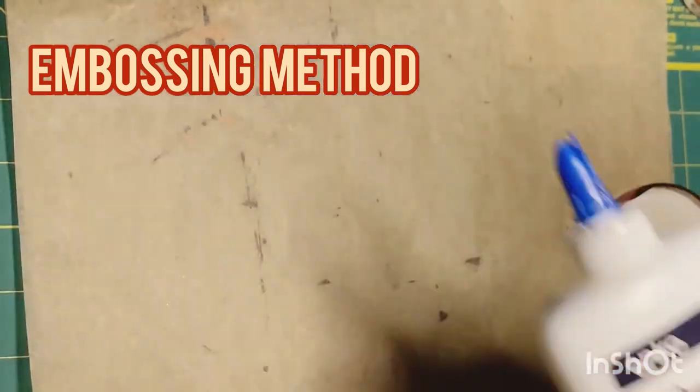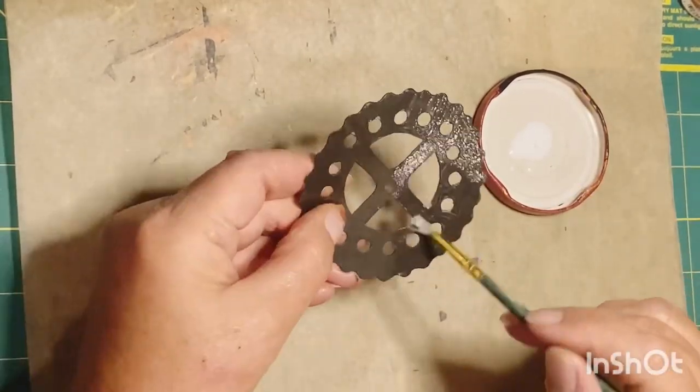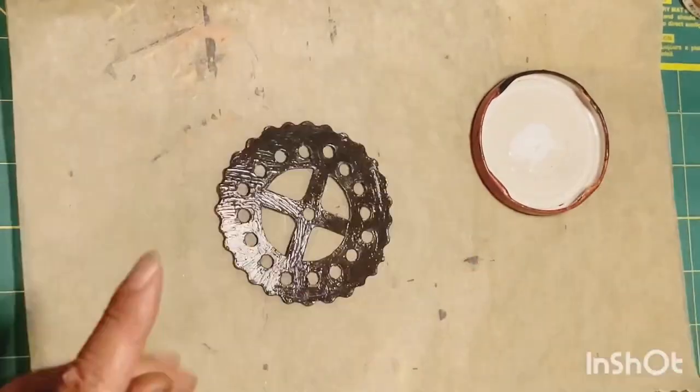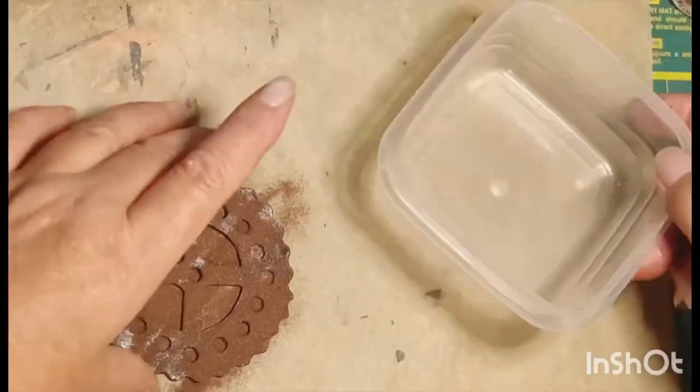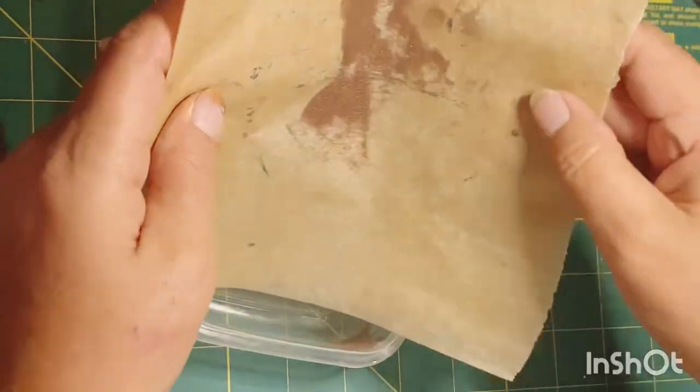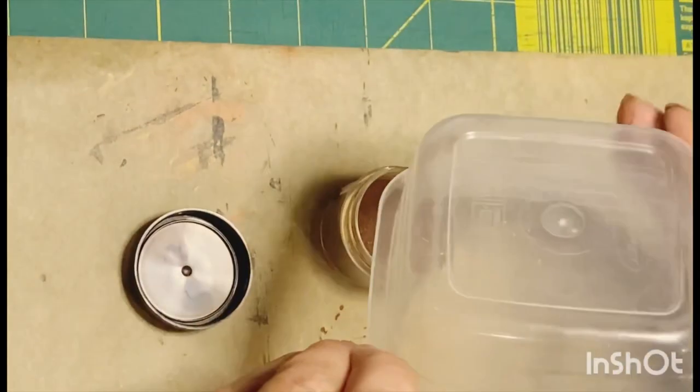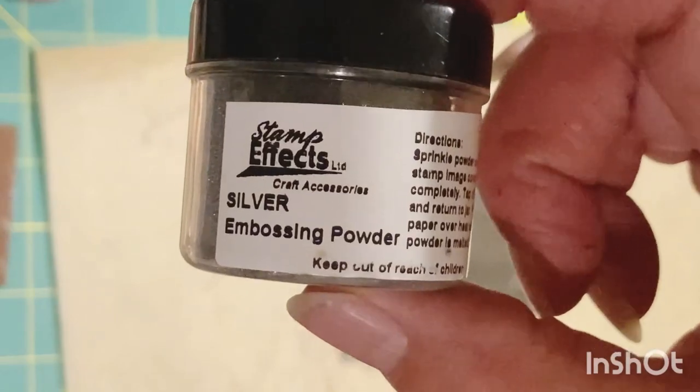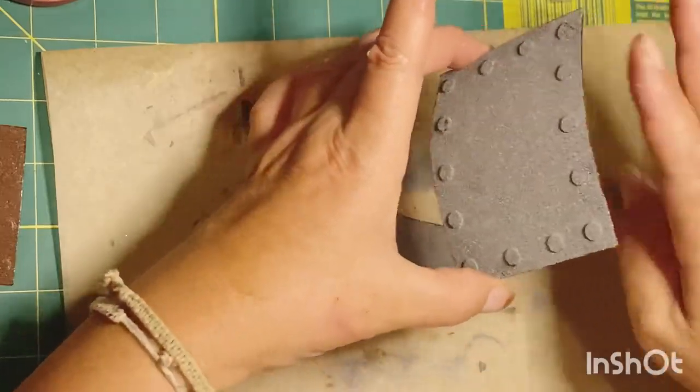This next method is embossing by using embossing powders. I'm just painting PVA glue onto the cogs and sprinkling the embossing powder all over the surface. This is the copper color. Don't waste the excess, just sprinkle that back into the container. I've got a silver and I've got a gold.